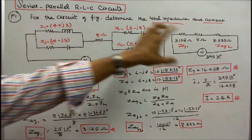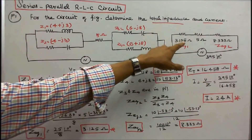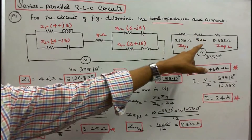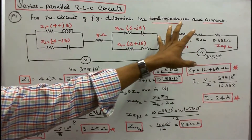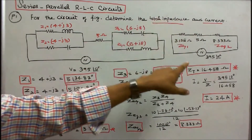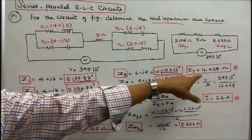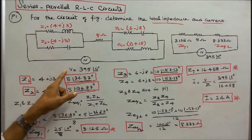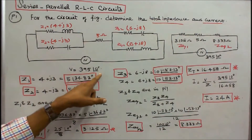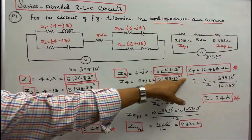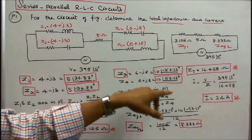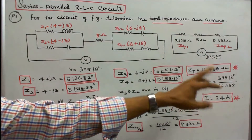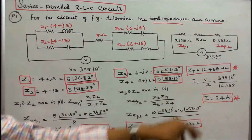I redraw the circuit: 3.125 ohms, 5 ohms, and 8.333 ohms. I can find the total impedance: total impedance = 16.458 ohms. I know the voltage is 395∠0 and the total impedance, so I can find the current: I = V/Z = 395∠0 ÷ 16.458 = 24 amps.